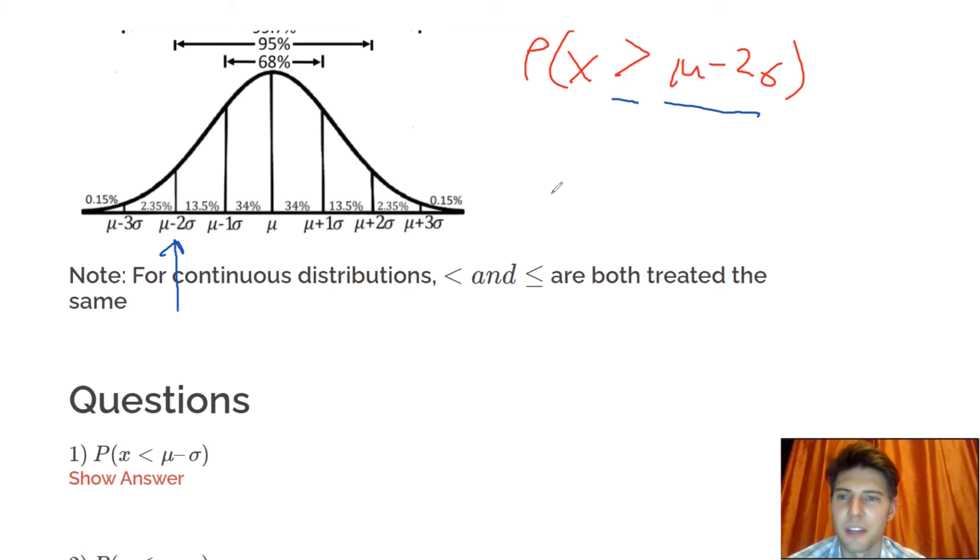And this says greater than. So we want more than that. So we're going to shade everything that's greater than it. Well, for this one, we have two choices. We can add up all of these numbers and that will give us the right answer.